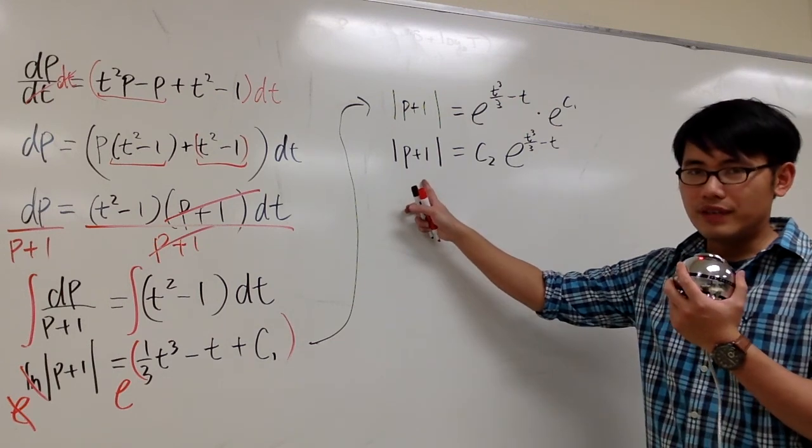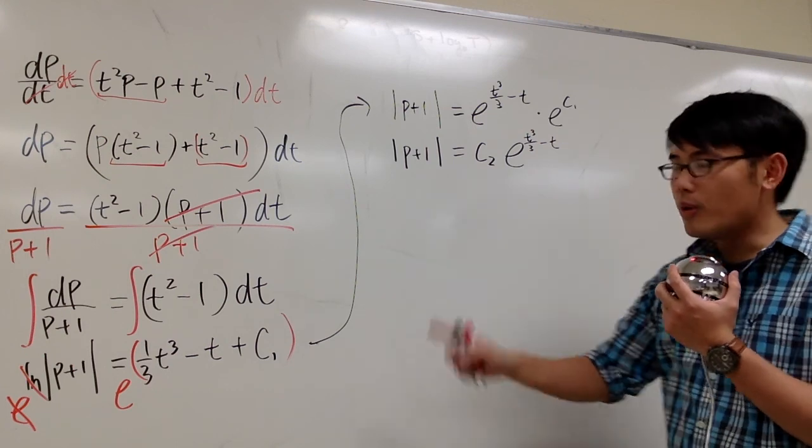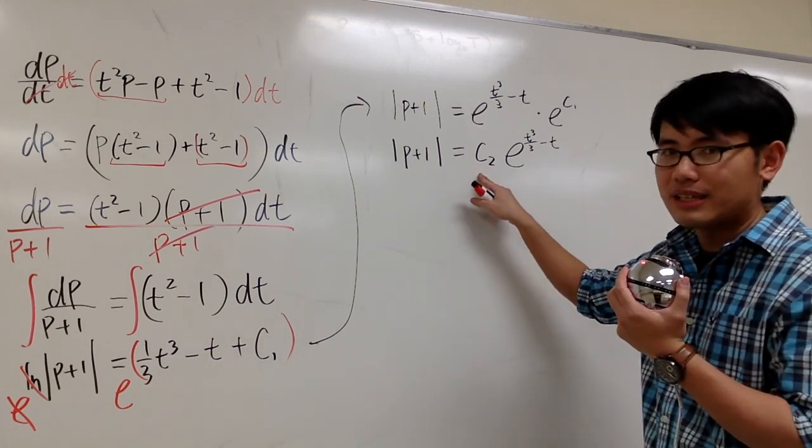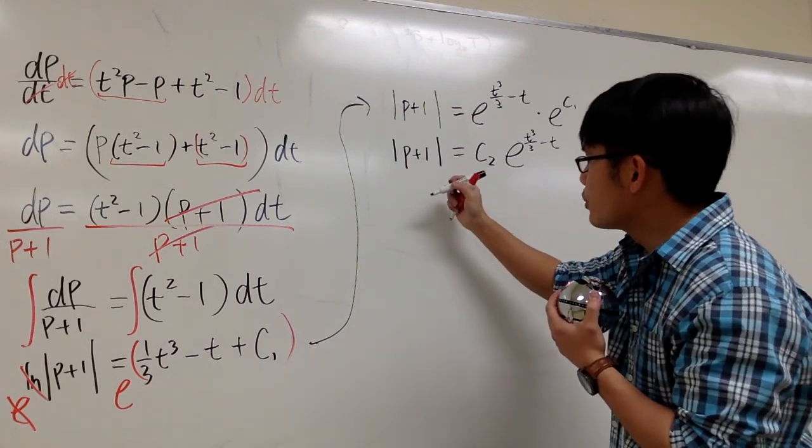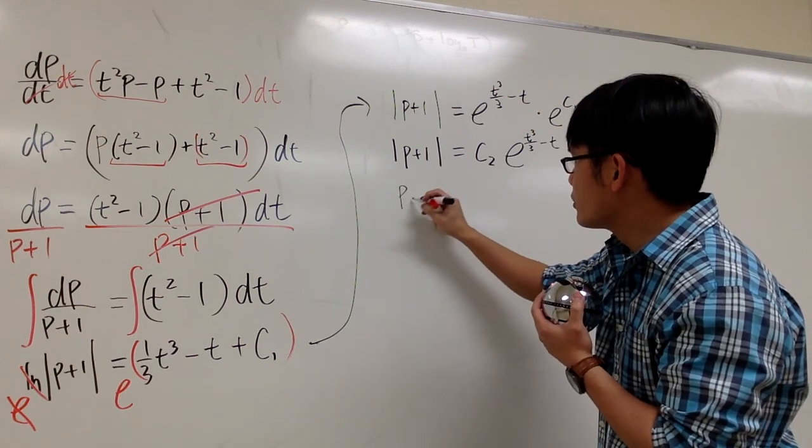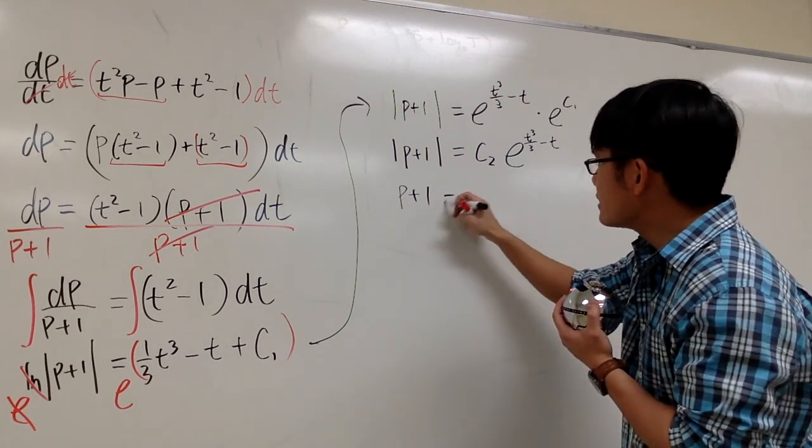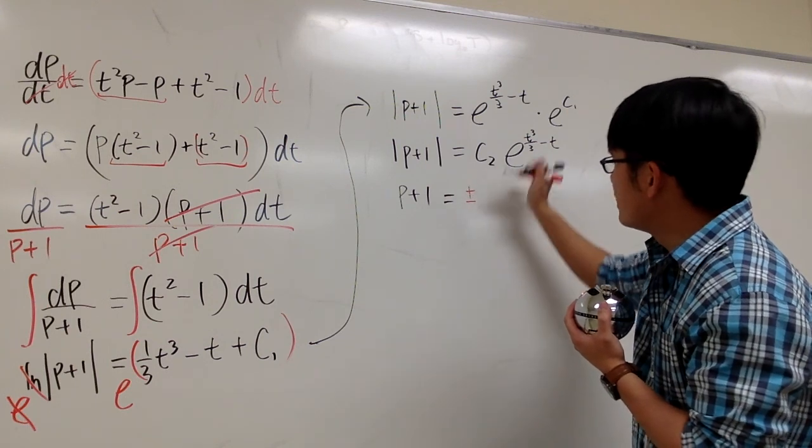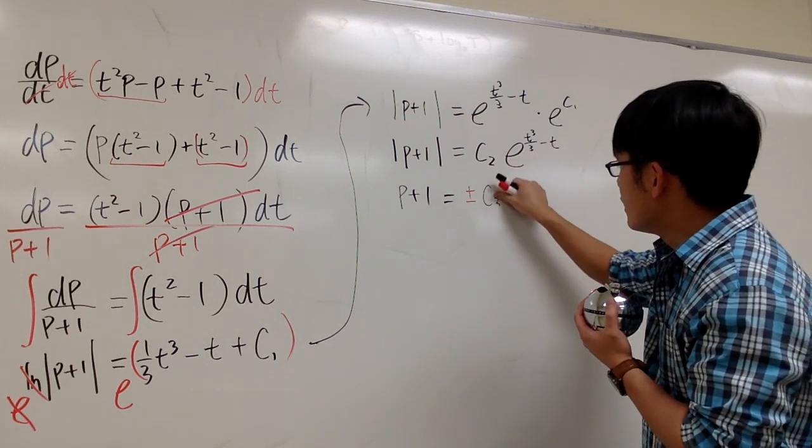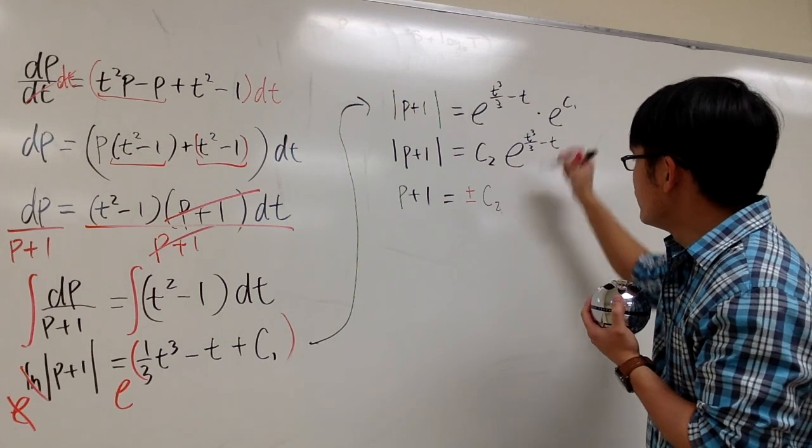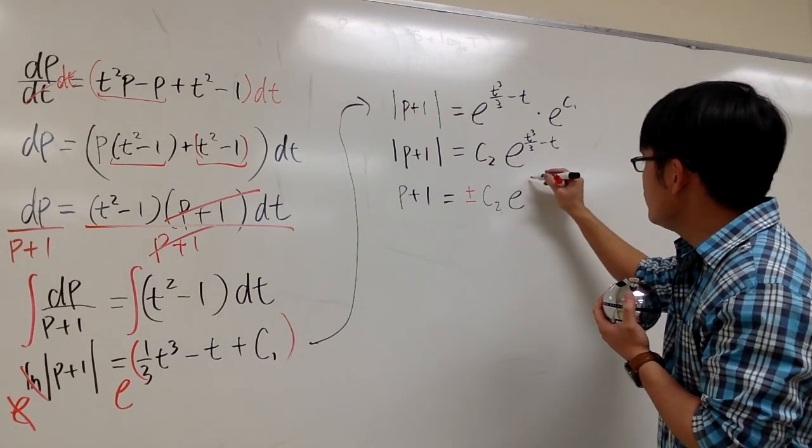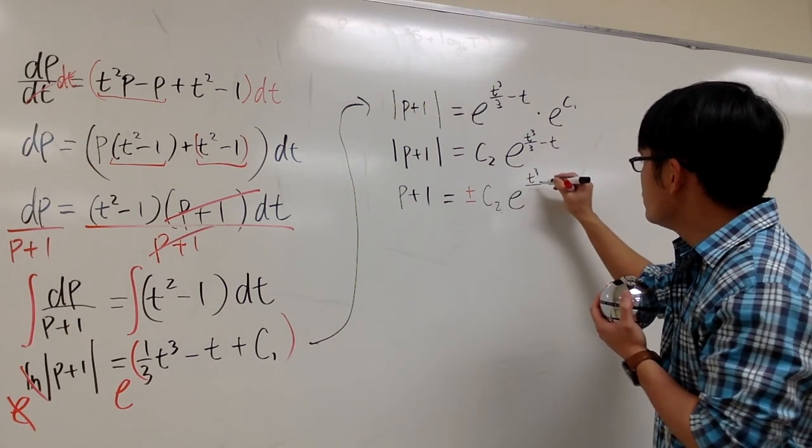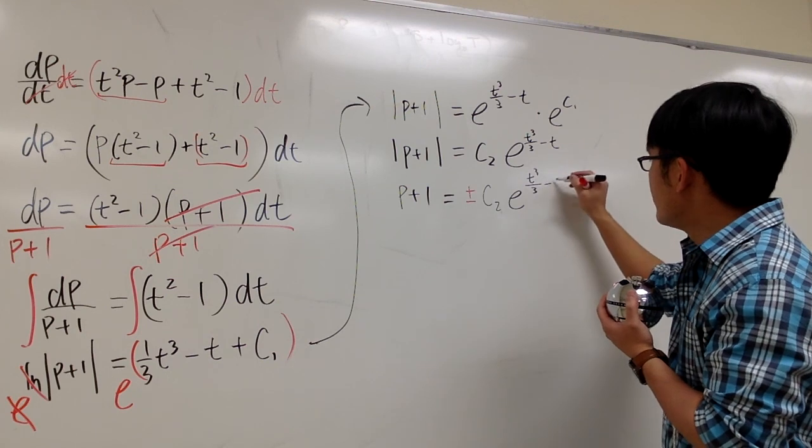How can we get rid of the absolute value? We can do so by putting plus minus on the right-hand side. So, right here, I'm going to get rid of the absolute value. I'm just going to write down p plus 1. But then on the right-hand side, I must include the plus minus, and we have the c2 right here. And then we have this function part, e to the t to the third power over 3 minus t.